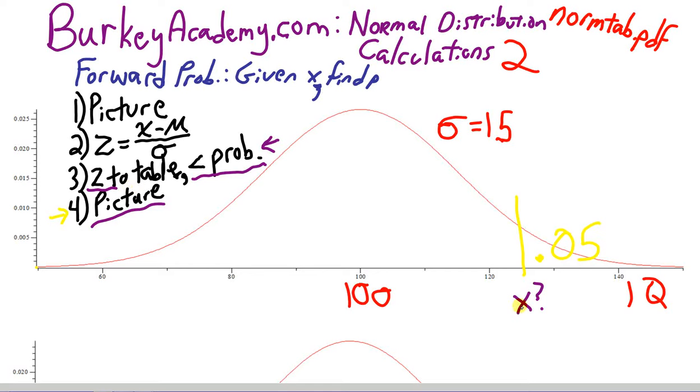So, if we want to find what z-score first, and then we can find what x, what probability should we take to the table? Well, if there's going to be 5% of people greater than this IQ, what we have to take to the table is the fact that 95% of people, I'm just going to add some zeros here, .9500 of probability needs to be less than this z-score and this IQ.